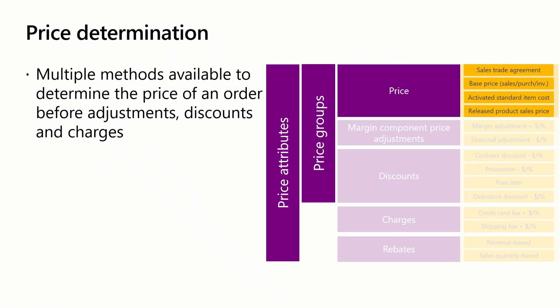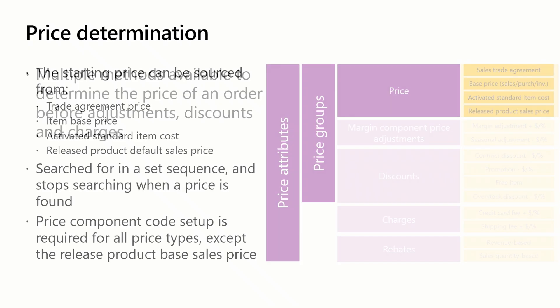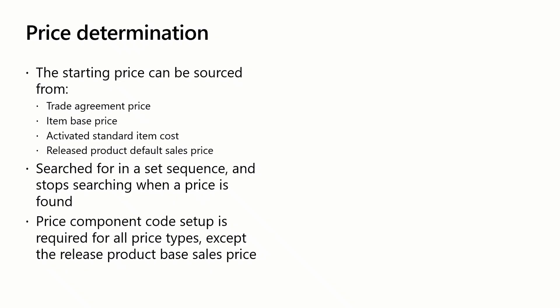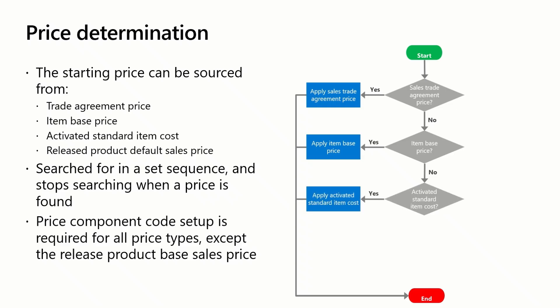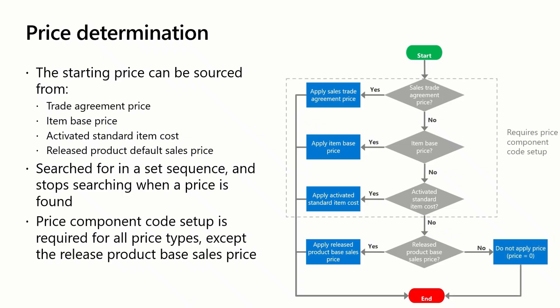The first step in the price calculation process is to determine the price of an item before any adjustments, discounts, or charges. The price can be derived from multiple sources such as the sales price on a trade agreement, calculated as an item based price, the activated standard item cost, or the base sales price of the released product. The price is searched in a set sequence starting from the sales trade agreement price. When a price is found, the search stops and the value is applied. If no price is found, the price is zero. The released product based sales price is the only price that does not require price component code setup to be applied.